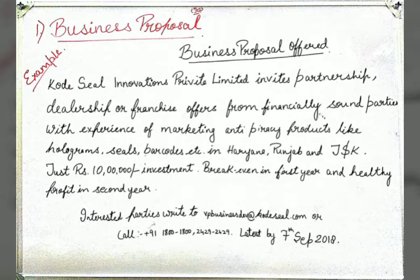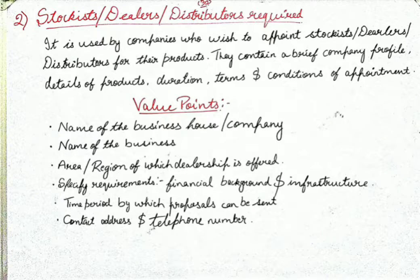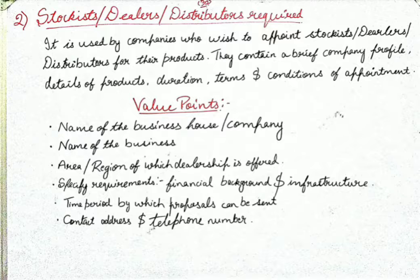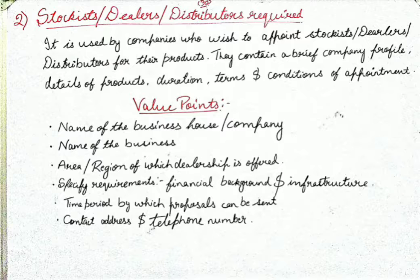The second type of classified advertisement is Stockist, Dealers, or Distributors Required. This is the heading of the advertisement. It is used by companies who wish to appoint stockists, dealers, or distributors for their products. This type of advertisement contains a brief company profile, as well as details of products, duration, and terms and conditions of appointment.